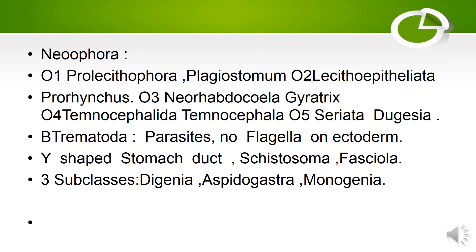Neoophora: Order 1: Prolecithophora — example: Plagiostomum. Order 2: Lecithoepitheliata — example: Prorhynchus. Order 3: Neorhabdocoela — example: Gyratrix. Order 4: Temnocephalida — example: Temnocephala. Order 5: Seriata — example: Dugesia. Next comes Trematoda.